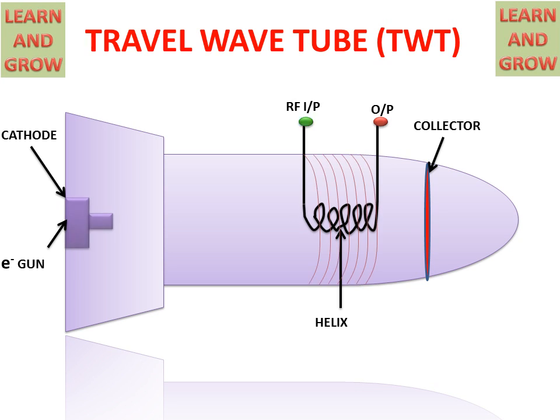The electron gun, also called electron beam, starts to emit electrons. Electrons pass through the helix.